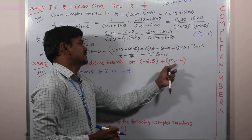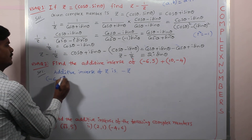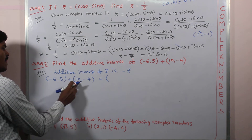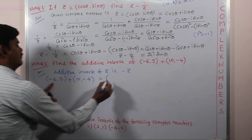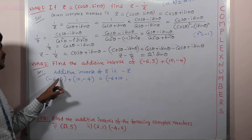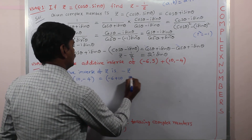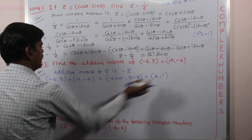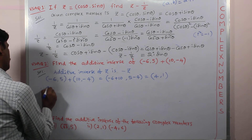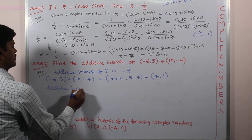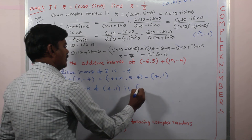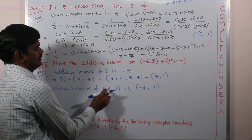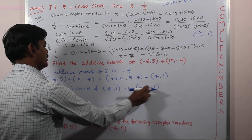First, simplify by adding the two complex numbers: minus 6 comma 5 plus 10 comma minus 4. Adding corresponding elements: minus 6 plus 10 equals 4, and 5 plus minus 4 equals 1. So the result is 4 comma 1. Therefore we are asked to find the additive inverse of 4 comma 1, which is minus 4 comma minus 1 — just change the sign of both elements.